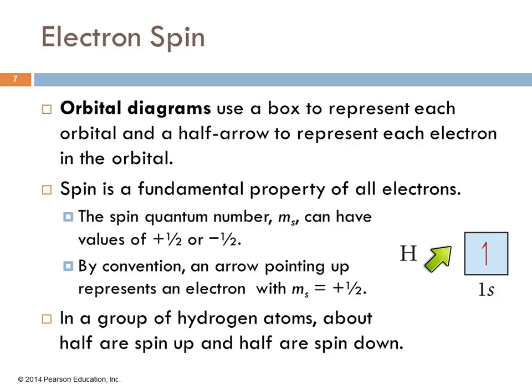So an orbital diagram, we're going to use a box to represent an orbital and we're going to have arrows represent the electrons. I like these because they're more of a picture. I'm a visual person. I want to see where are those electrons.